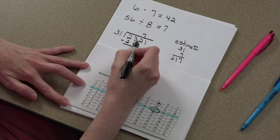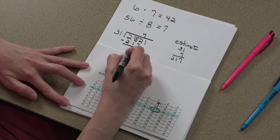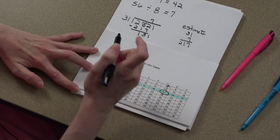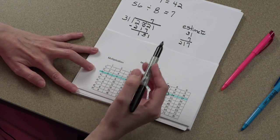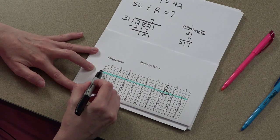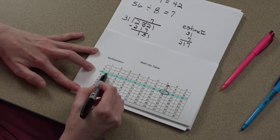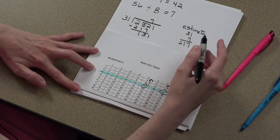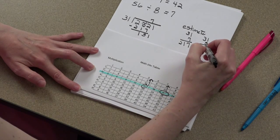After we subtract, we get 151. We'll start this process all over again. About how many times does 3 go into 15? Well, we'll go down the same column. 3 goes into 15 about 5 times. So I'm going to multiply 31 times 5, seeing if that's okay.